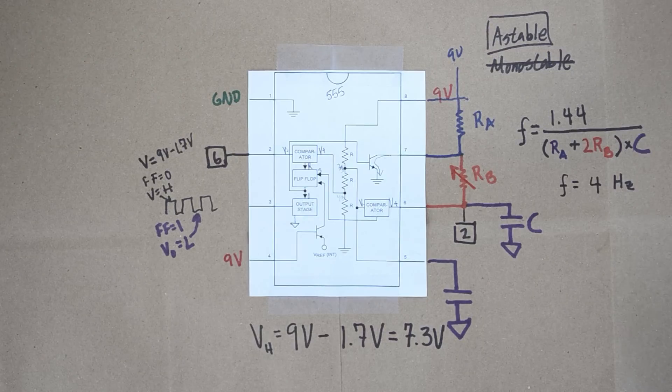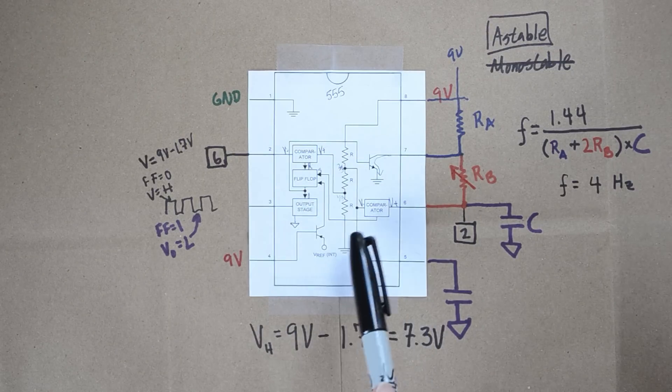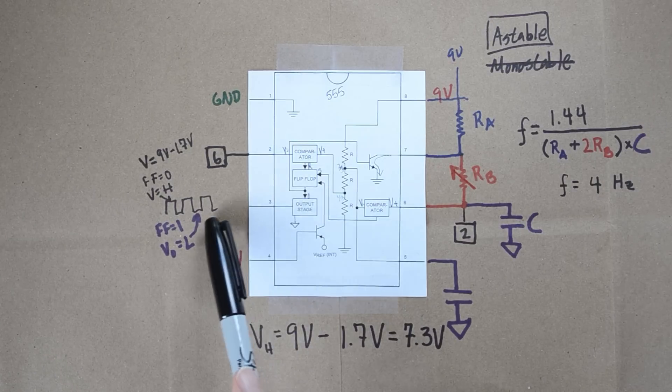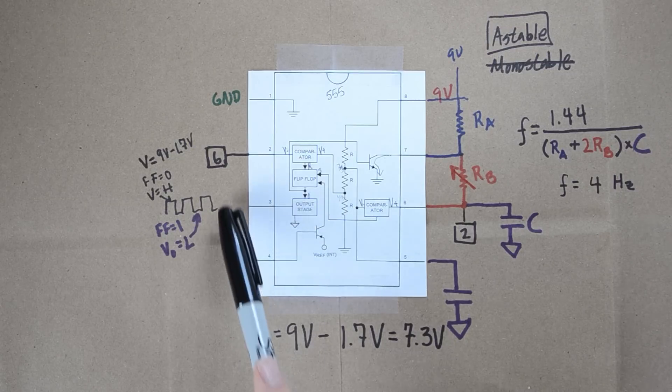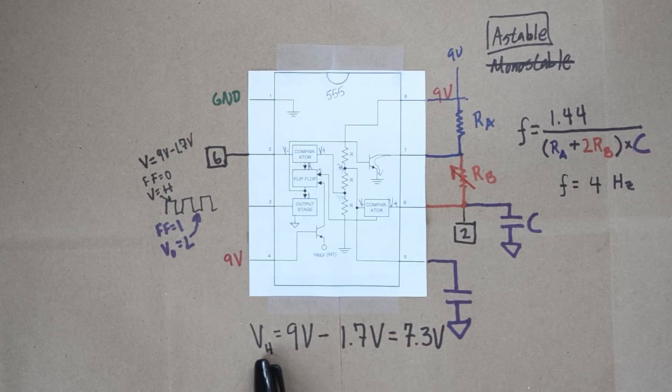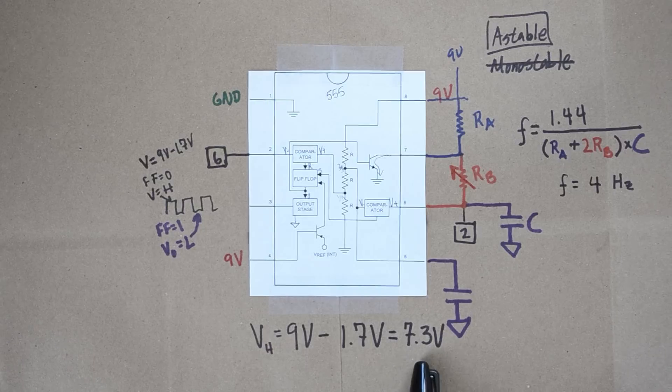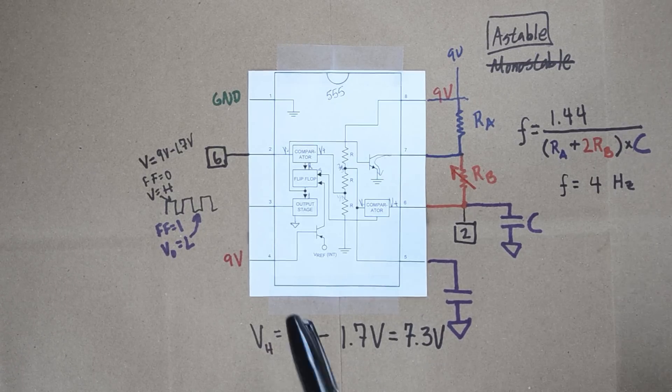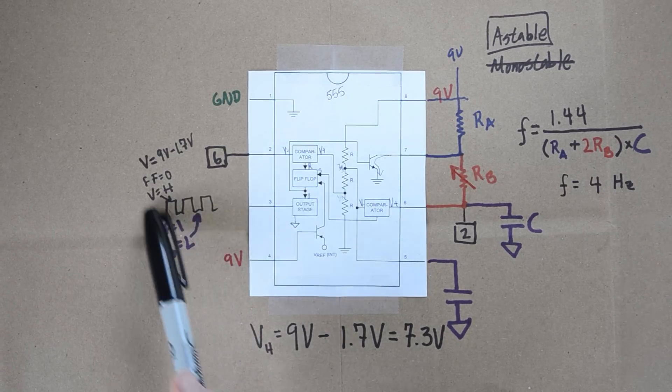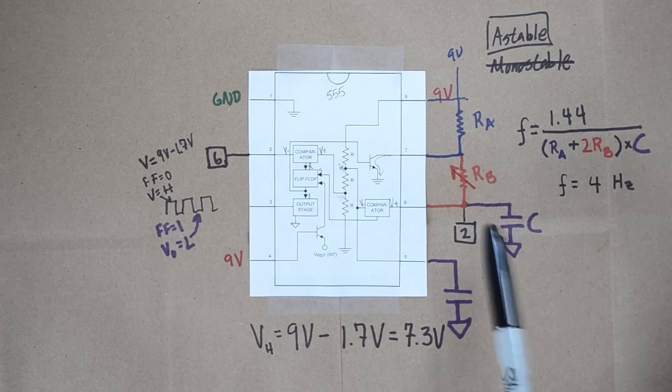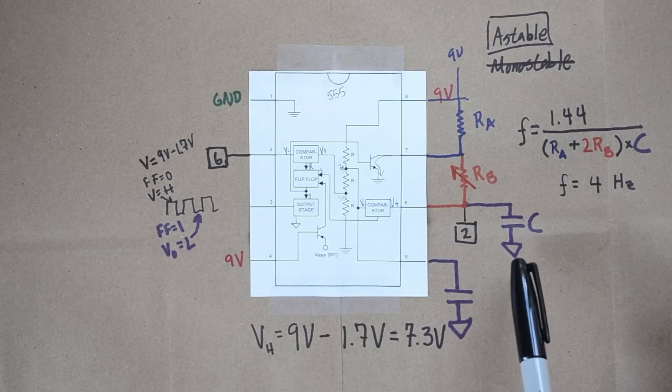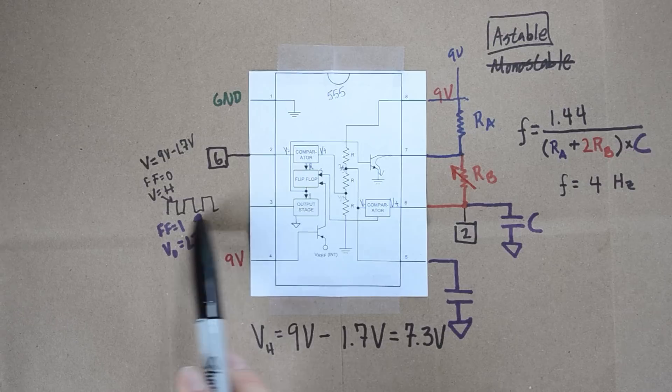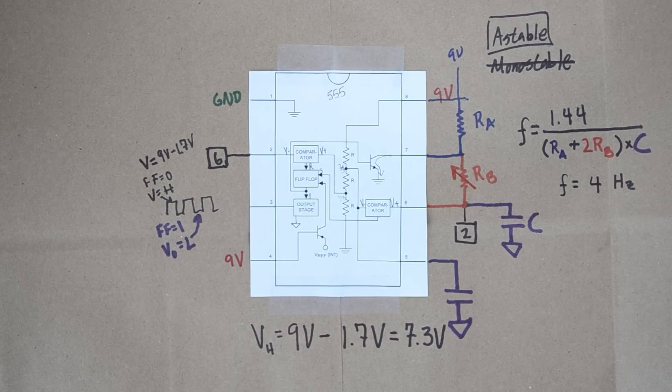This should look pretty familiar from the last video. We talked about how the 555 timer operates and eventually how we get this output voltage where the output goes from high to low. When it goes low it's pretty much zero volts, when it goes high the voltage on the high side is 7.3 volts. We also said that we could figure out how often this occurs by looking at this frequency, F equals 1.44 divided by all of these things. We also said how these resistors and this capacitor control how often this transition occurs. So let's take a look and see what we can do with that output.